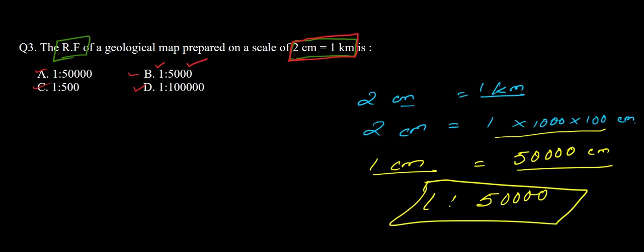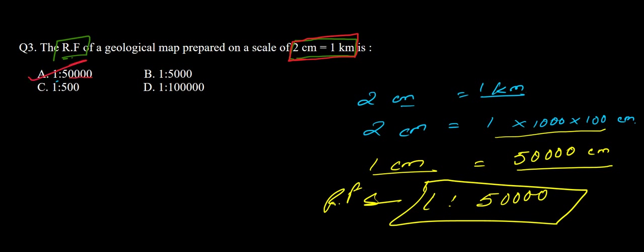The RF is therefore 1:50,000. You need to check the options very carefully because three options represent 1:5 with different numbers of zeros. The correct one has four zeros after the 5, which is 50,000. Option A has four zeros, so option A is the correct answer.